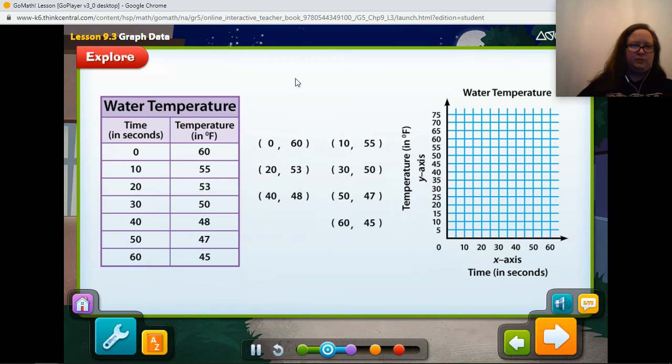Now, you need to plot a point for each ordered pair. So, remember, when you do our X axis first, go over, then up. For the first ordered pair, locate 0 on the X axis, and then move up the grid to 60 on the Y axis.